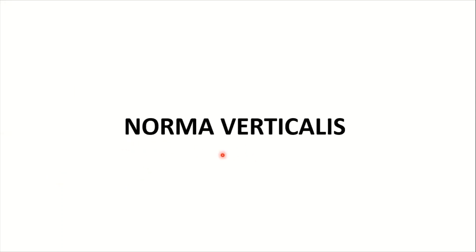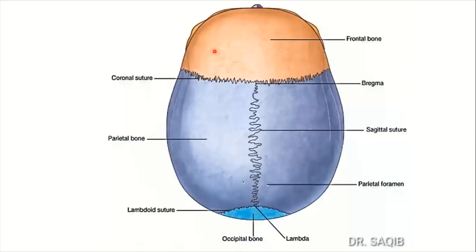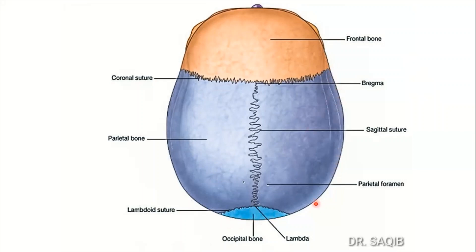Let's study in detail the norma verticalis. This is a superior view of the norma verticalis. First, its boundaries: the anterior boundary is formed by the frontal bone; the posterior boundary is formed by the occipital bone; and the lateral boundary on each side is formed by the parietal bones. The bones taking part in the formation of norma verticalis are the frontal bone, two parietal bones, and the occipital bone — four bones in total.